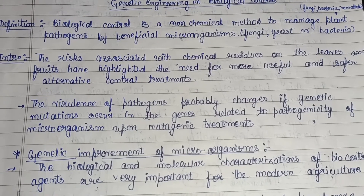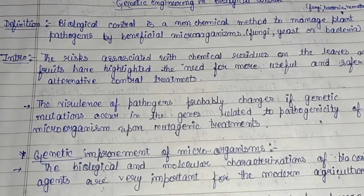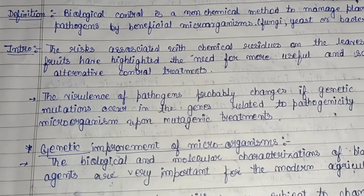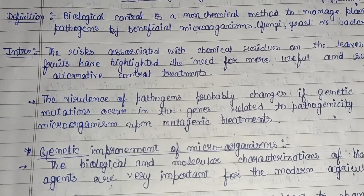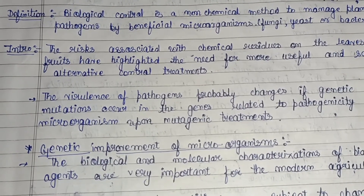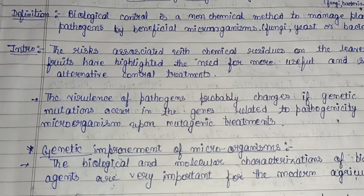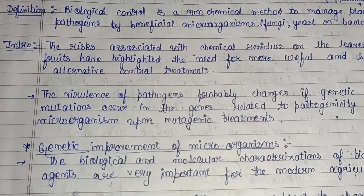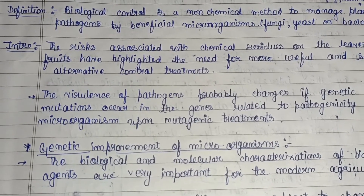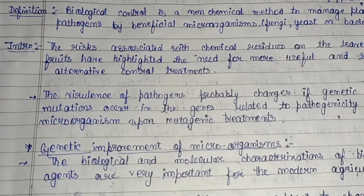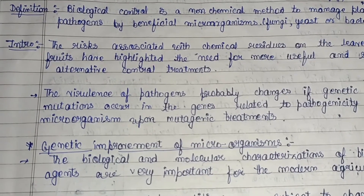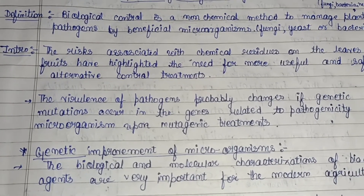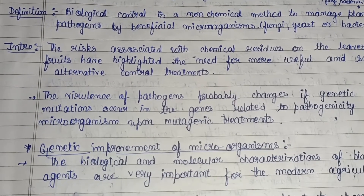The risks associated with chemical residues on leaves and fruits have highlighted the need for safer alternative control treatments. Chemicals are applied externally and leave side effects on other organisms — when animals eat the fruits and leaves they feed upon, this results in toxic effects. So there is a clear need for biological control methods.